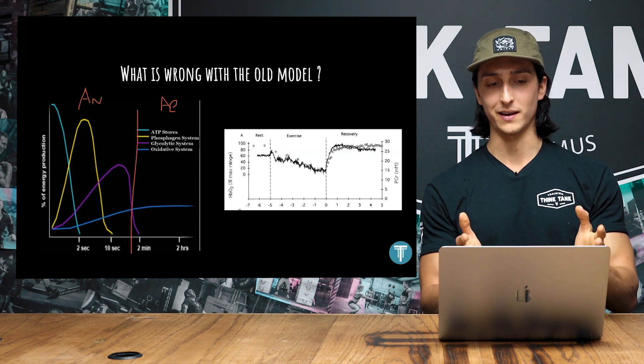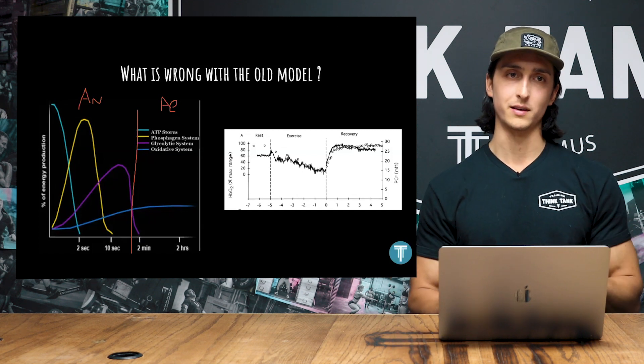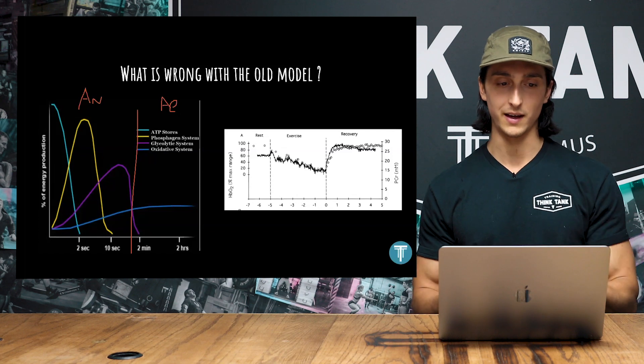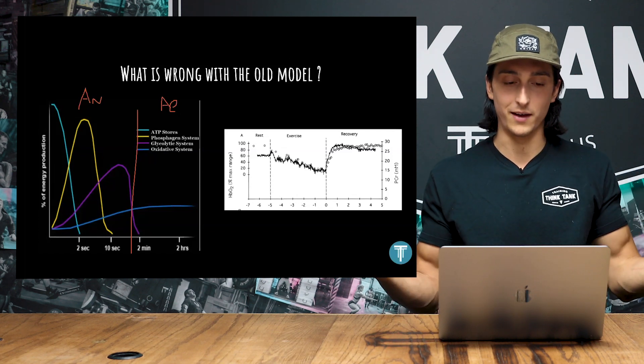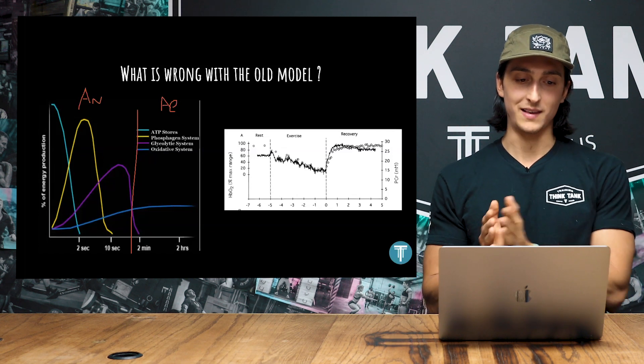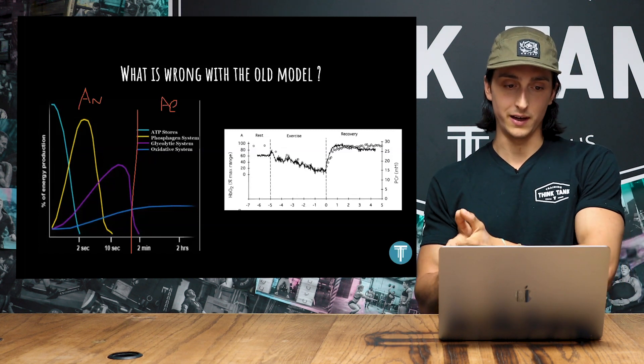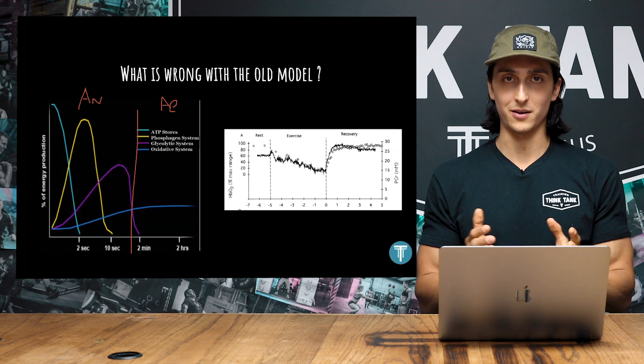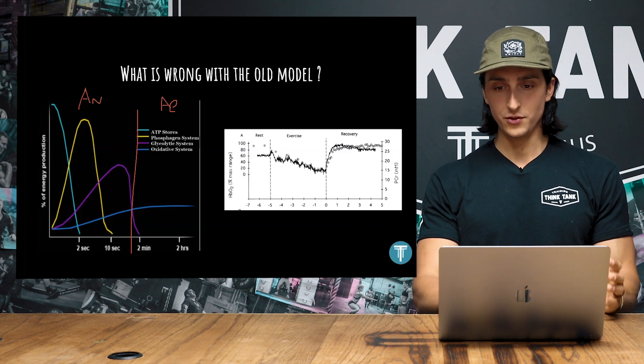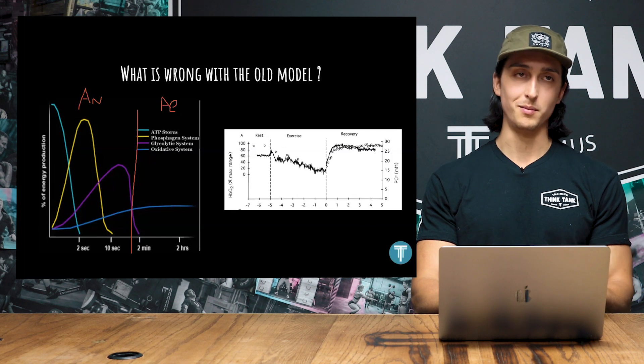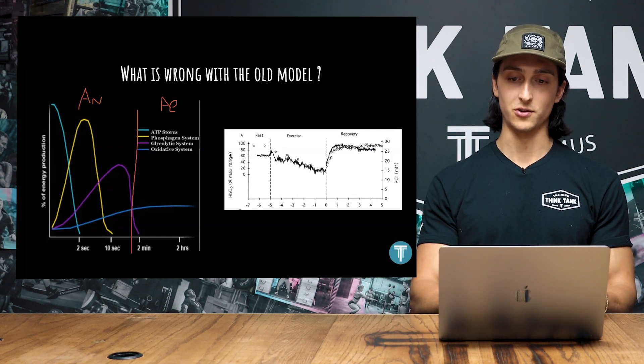But once you blow past two seconds, now it's starting to get a little bit more reductive. It's just phosphagen, glycolytic, and oxidative. Apparently, ATP stores got left out, and those don't do anything past two seconds. Then past that 10 seconds, it's just glycolytic and oxidative. And then past two minutes, it claims that we're only using the oxidative system. The issue is that this model isn't in agreement with most of the contemporary scientific literature.